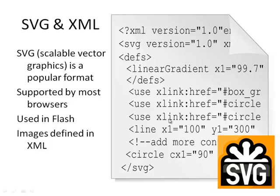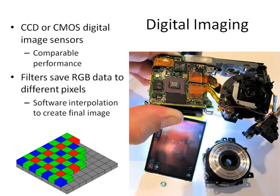SVG is a very popular format, supported by most modern web browsers. It's used in Flash and uses XML — extensible markup language — as a way of defining the actual image. Here's a little bit of example code for defining an SVG image, with instructions for drawing particular lines and particular shapes. That's, very briefly, how computers can output images to screen.